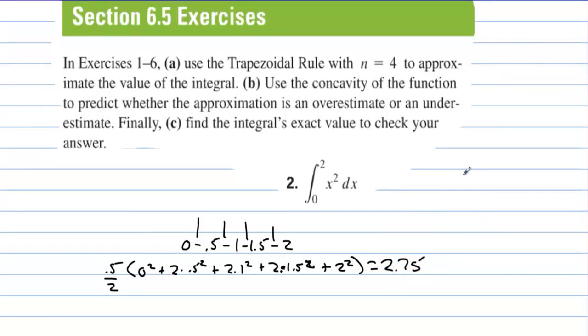If we graph x squared, make a little sketch of it, from let's say 0 to 2, the concavity is concave up. Imagine taking one big trapezoid from 0 to 2 rather than 4 of them. It would look like this, and then come down here, and this would be the trapezoid. Even though this is a triangle, if we move over a little bit, then it looks more like a trapezoid.